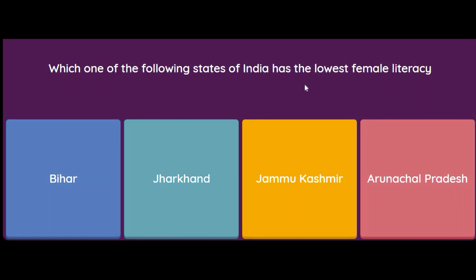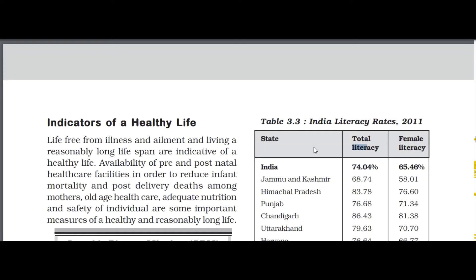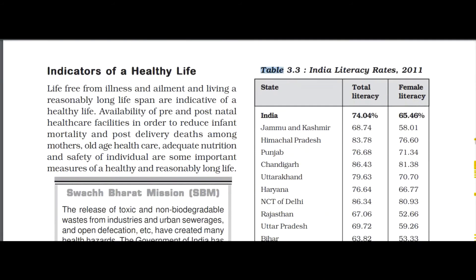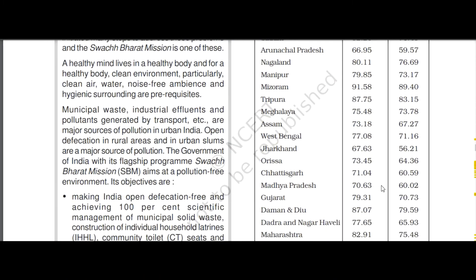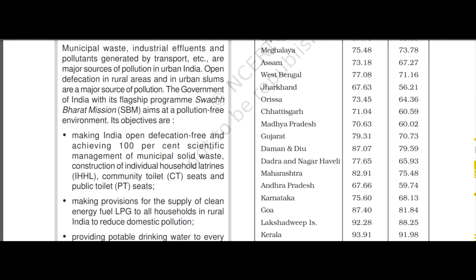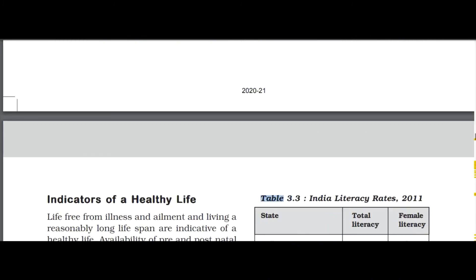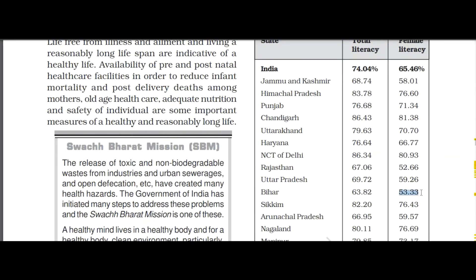Which one of the following states of India has the lowest female literacy? Options are Bihar, Jharkhand, Jammu & Kashmir, or Arunachal Pradesh. The answer given is Bihar. Referring to Table 3.3 on India's literacy rate: Bihar has a female literacy rate of 53.33%. However, there is one more state not mentioned in the options — Rajasthan — which actually has a lower female literacy rate of 52.66%. So if a question asks for the state with the lowest female literacy rate overall, the answer would be Rajasthan, followed by Bihar at 53.33% and Jharkhand at 56.21%.